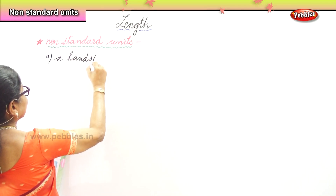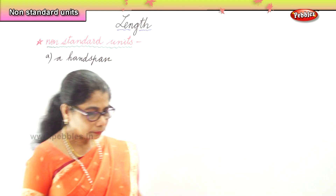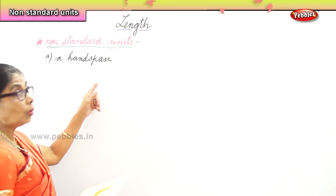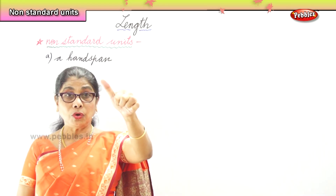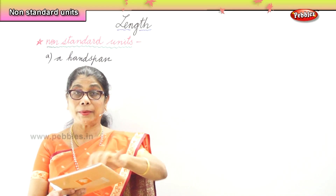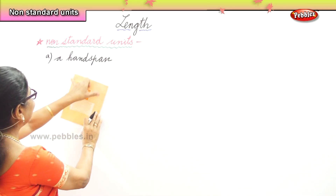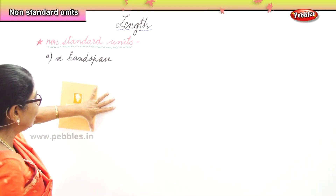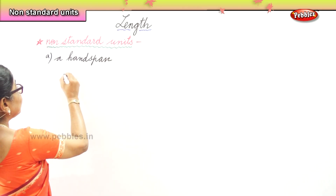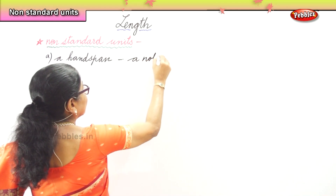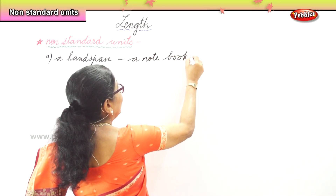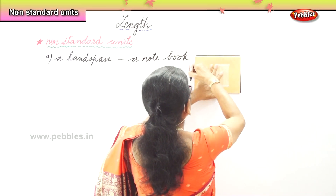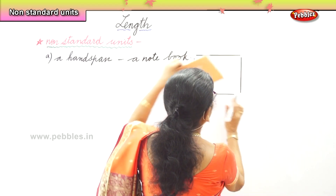The first non-standard unit is a hand span. Now if you have a book and you would like to know the length of the book, you use a hand span. What is a hand span? From one end of your big thumb to your small finger — that is a hand span. So if you keep your hand on the book and say it is almost one hand span, that is the length. Now we can measure a notebook using a hand span.